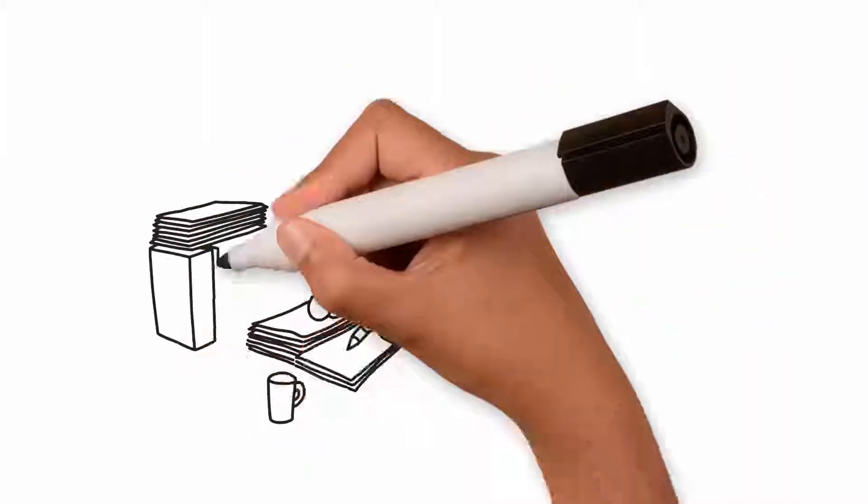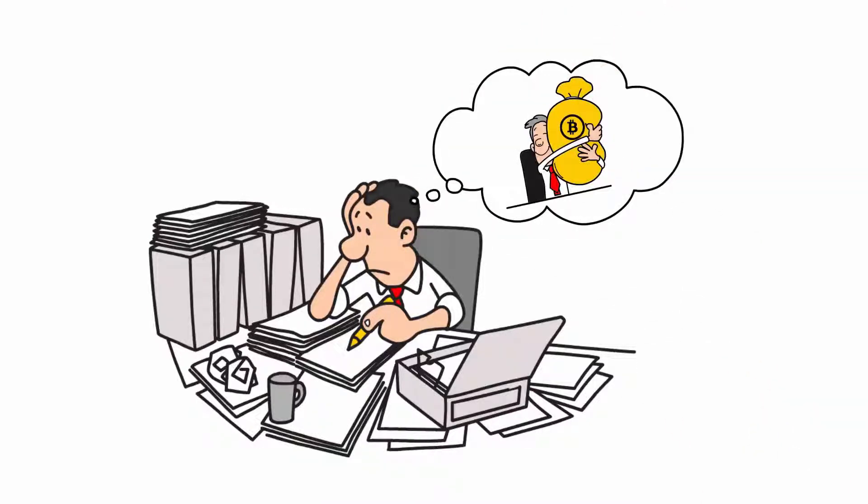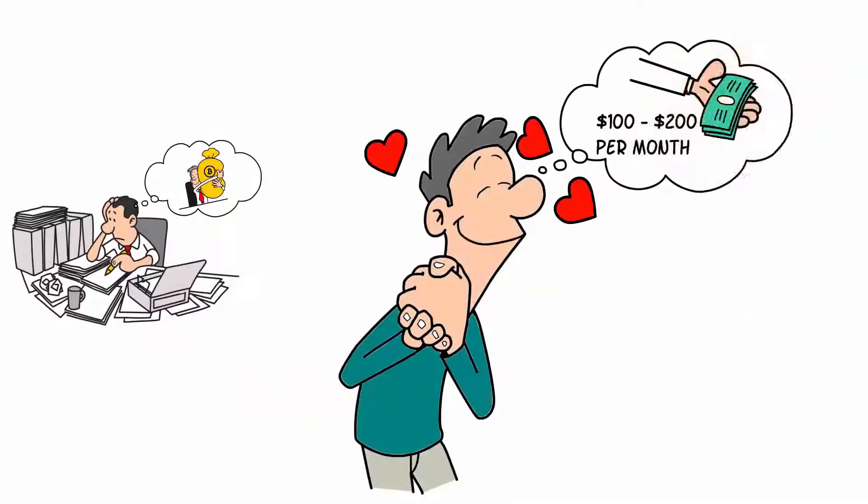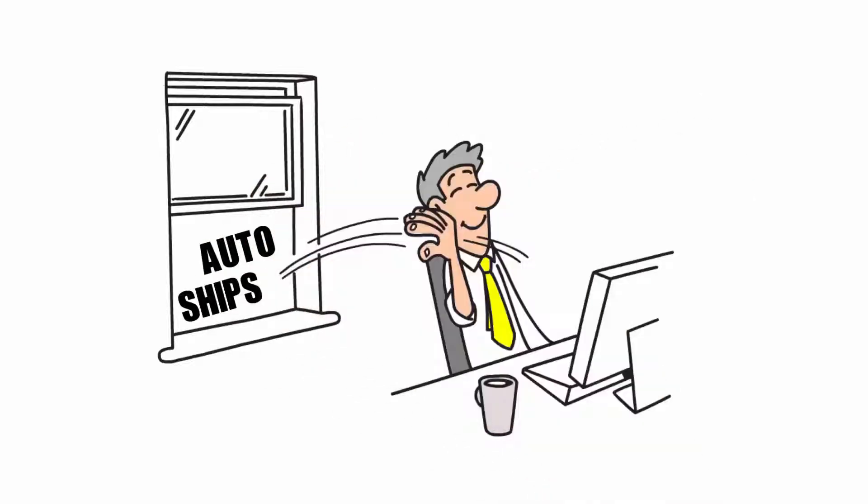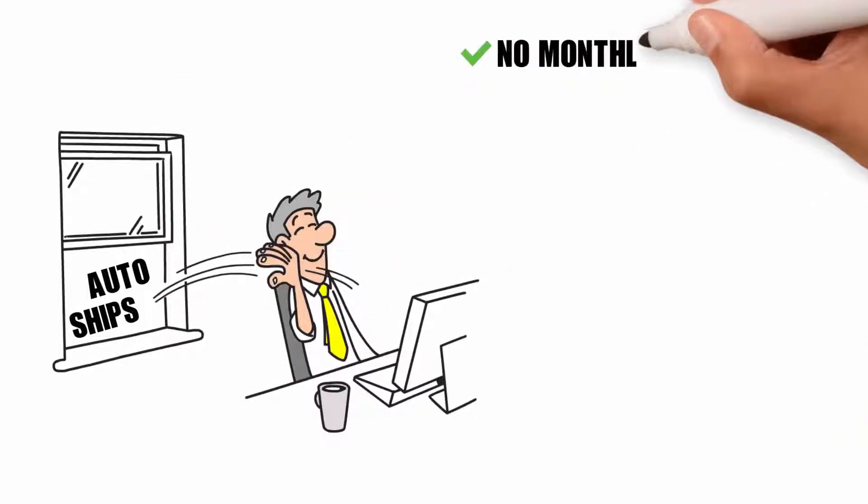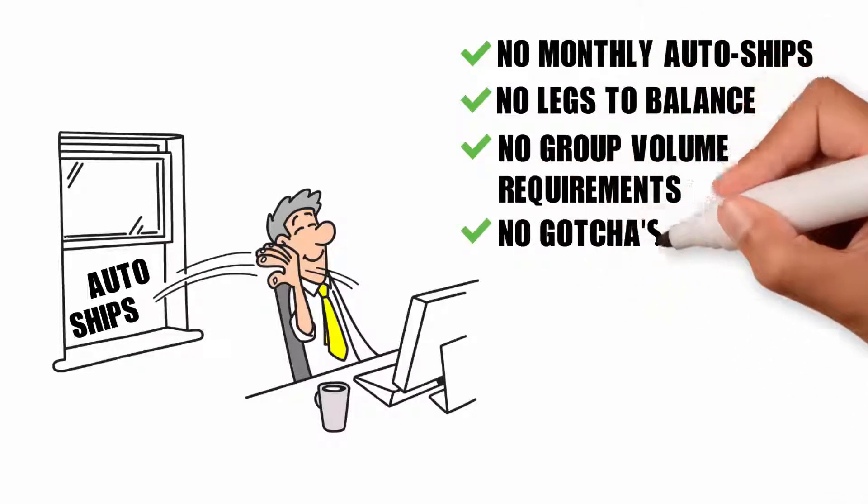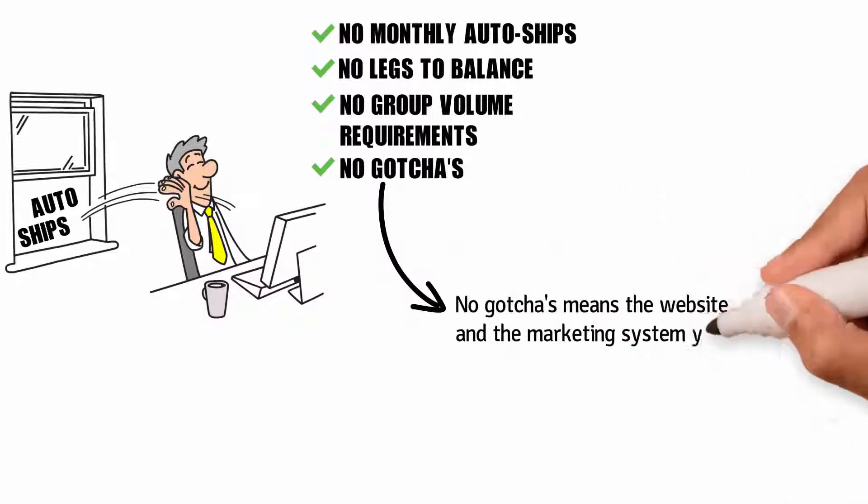Perhaps you're fed up trying to balance legs in a binary or needing to have thousands in your team to earn serious income. I'm sure you love spending $100 to $200 on monthly autoships. More Crypto threw all of that nonsense out with the garbage. No monthly autoships, no legs to balance, no group volume requirements. In fact, no gotchas.